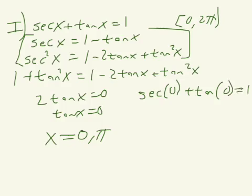Secant of 0 plus tangent of 0 equals 1. Secant of 0 is the same as 1 over cosine of 0. That's 1. Tangent of 0 is 0. Yes. Looks like that works.